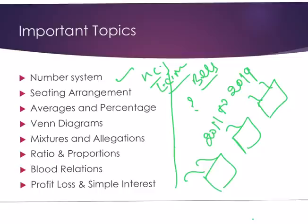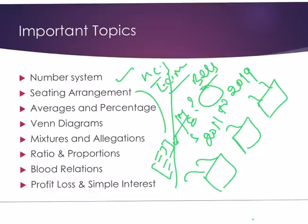There are short tricks for sitting arrangement, and you can practice those questions very well. We will discuss this in the next lecture. Average and percentage — from this topic, every year 1 to 3 questions appear. Once average and percentage are clear, your profit and loss topic becomes very easy.